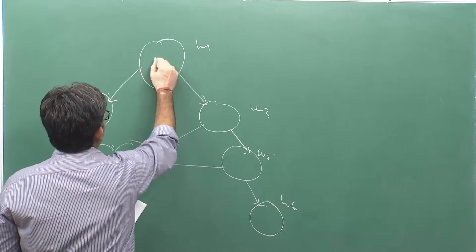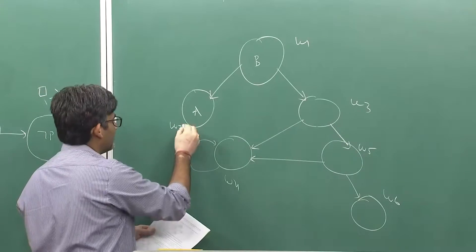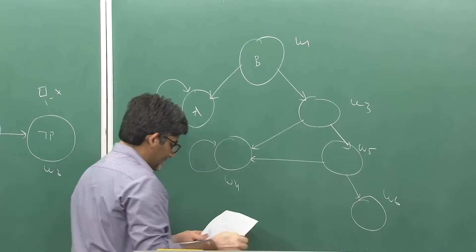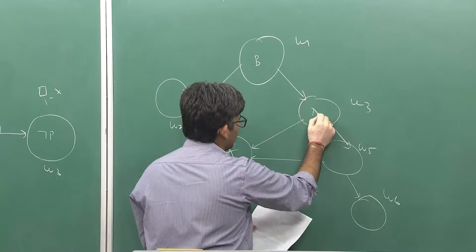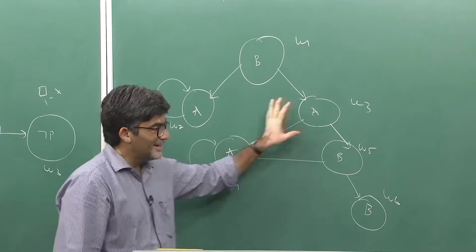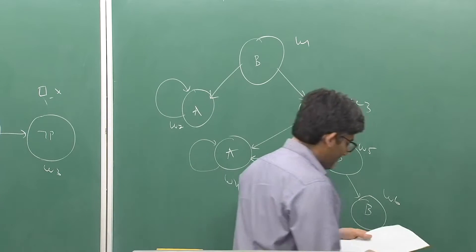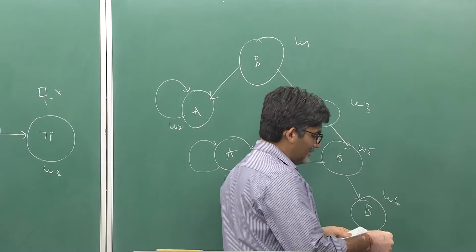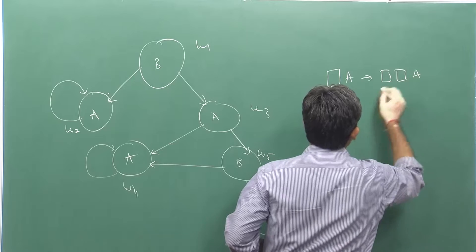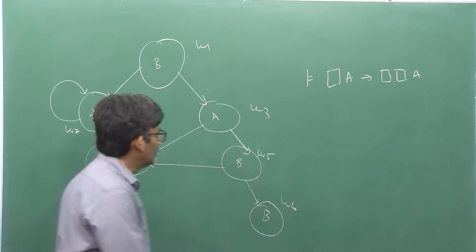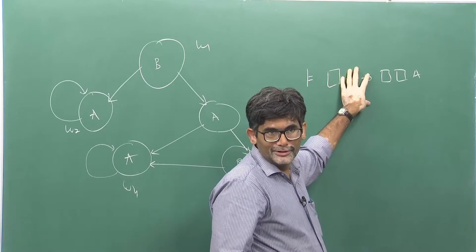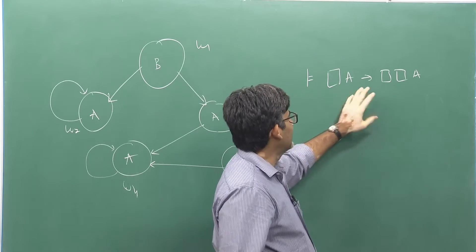We also need to specify which atomic sentences are true in each world: B is true in W2, A is true in W1, A is true in W3, A and B are true in W4, and B is true in W5. Now we evaluate the formula necessity of necessity of A. If this formula holds in all possible worlds, it is a tautology; if it is false in at least one world, it does not hold universally.